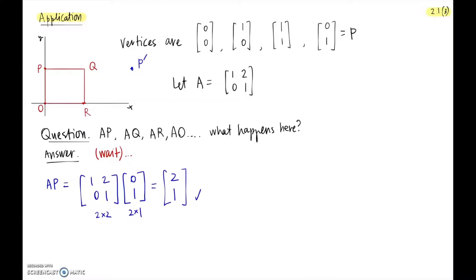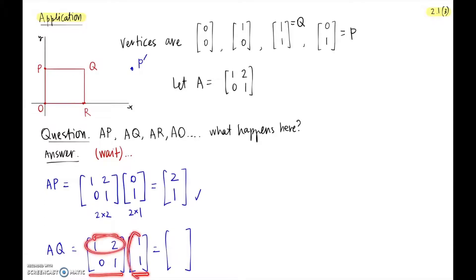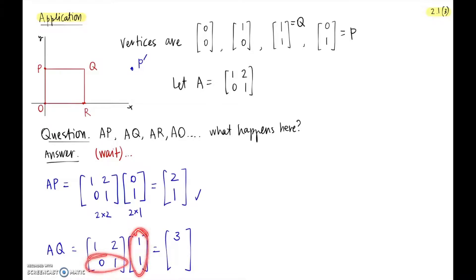Next let's find where Q goes. Q is the point (1,1). Computing A times Q: first row gives 1 times 1 plus 2 times 1 equals 3; second row gives 0 times 1 plus 1 times 1 equals 1. So Q maps to Q′ at (3,1). So P maps to (2,1) and Q maps to (3,1).